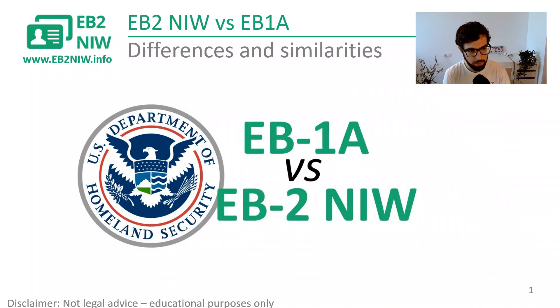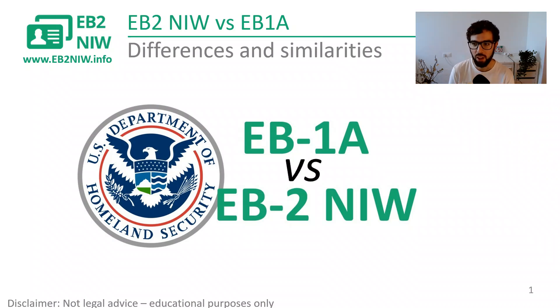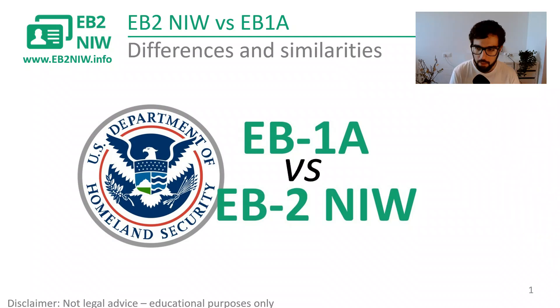Hi everyone, my name is Oscar and I'm a scientist. In today's video we're going to talk about two green card categories that allow you to self-petition, where you can be the owner of your green card process. EB1A and EB2NIW are the two categories we're going to touch on today. I usually talk a lot about EB2NIW in this channel, but I will slowly also introduce some EB1 videos because I think it's a really interesting option for many people.